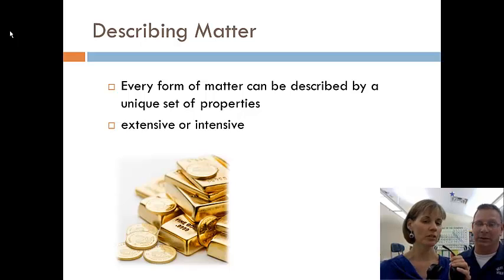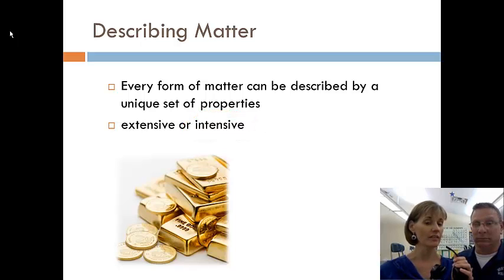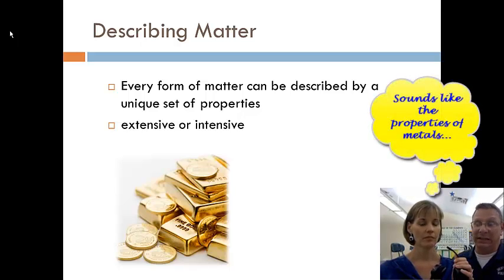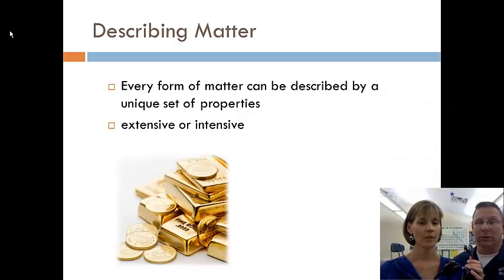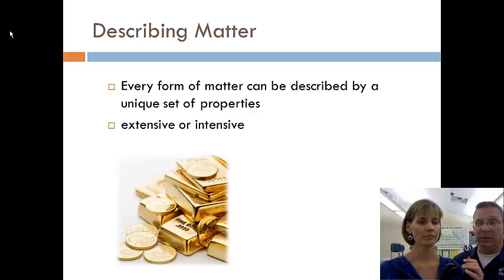So looking at this picture of the gold bullion treasure there, an intensive property then would be the fact that it's gold colored, right? Yes. Because it looks like there's pieces of different sizes, but they're all that gold color. They all have that luster. They're shiny, which is an intensive property of gold. Well that makes sense. So if it doesn't depend on the amount, then it's an intensive property. And why do we use these properties? So that we can tell one substance from another.